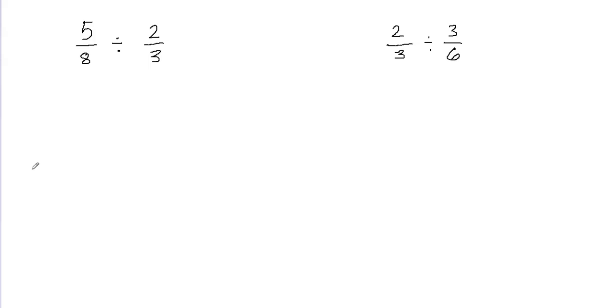There are three simple steps to divide fractions. First, we convert the division problem into a multiplication problem and turn the second fraction upside down. Then we multiply both fractions. The third step is to simplify the fraction if needed.